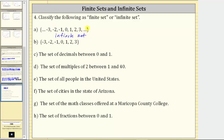Now if we compare this to B, notice how there's no dot, dot, dot to the left or the right, which means in this case we have a finite number of elements in the set. This is a finite set because we can determine the exact number of elements in the set. There are one, two, three, four, five, six, seven elements in this set — this is a finite set.